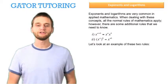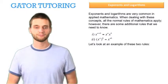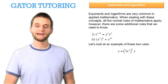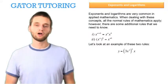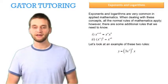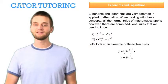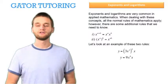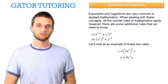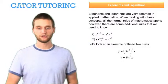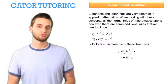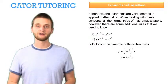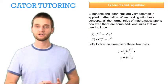Let's look at an example of these two rules. If y equals 3x cubed, all squared, times x, then we can simplify this. First, we need to distribute the squared power to the 3x cubed, since the squared power is the exponent on that entire phrase and that entire function.